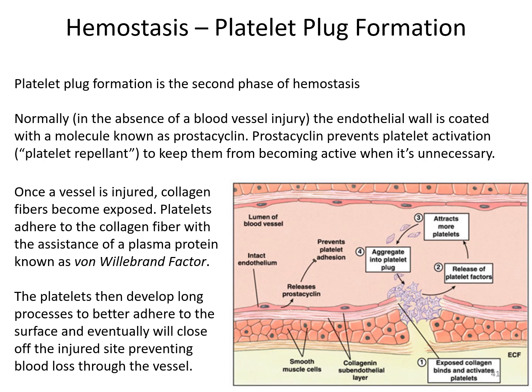Platelet plug formation is the second phase of hemostasis. Normally, the endothelial wall is coated with prostacyclin, which prevents platelet activation — a platelet repellent to keep platelets inactive when not needed. Once the vessel is injured, collagen fibers become exposed. Platelets adhere to those collagen fibers with the assistance of von Willebrand factor (a small plasma protein). This adhesion to exposed collagen at the injury site begins the process of forming a platelet plug.